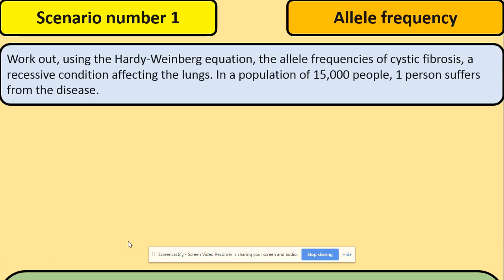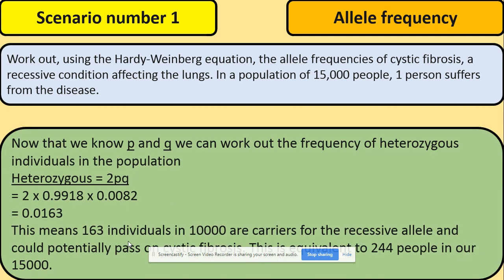If you would like to take it further you can work out now the genotypes. For example the heterozygous within this population, what do we need? We need our p and q multiplied by two. So that is the frequency of the genotype within the population.